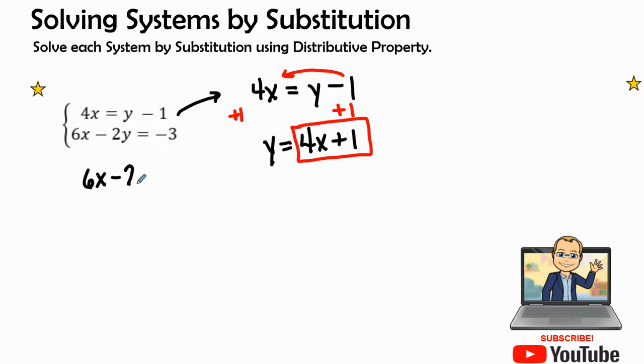So I have 6x minus 2y equals a negative 3. Wherever I see a y I'm plugging in, so I'm going to keep that 6x minus 2 times the value of the expression of y which would be 4x plus one, and then it will all equal a negative 3.